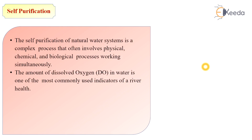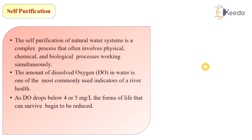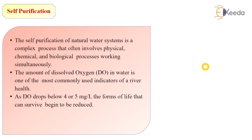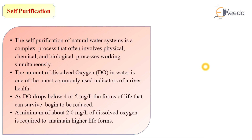The amount of dissolved oxygen in water is one of the most commonly used indicators of river health. As dissolved oxygen drops below 4 to 5 mg per litre, the forms of life that can survive begin to be reduced. A minimum of about 2 mg per litre of dissolved oxygen is required to maintain the higher life forms.